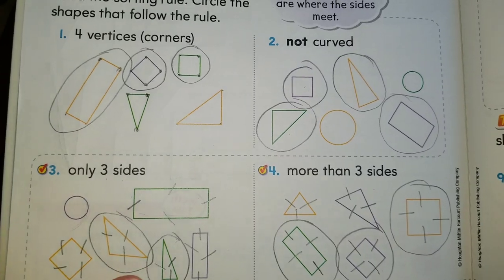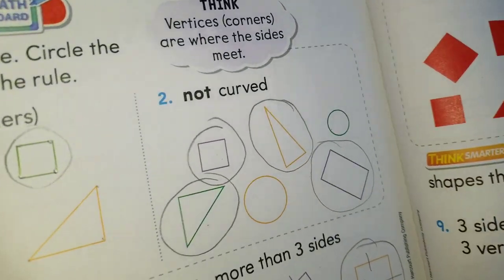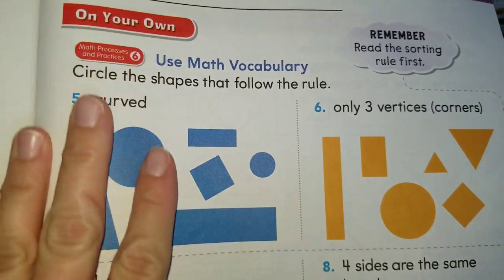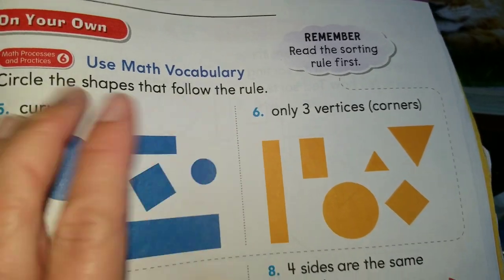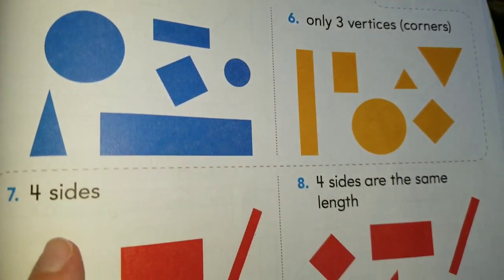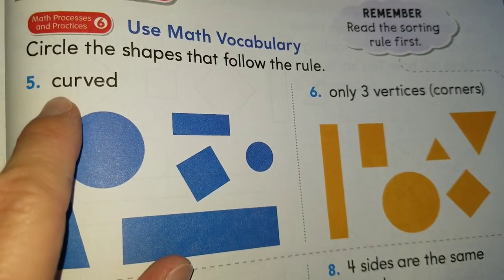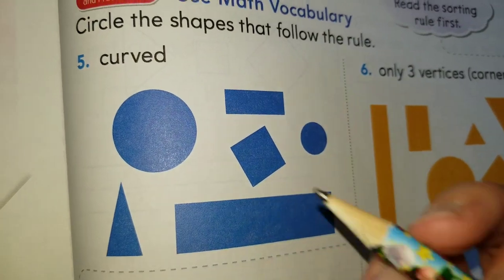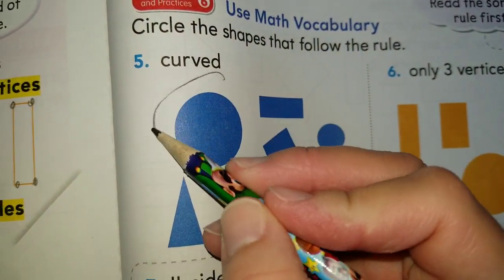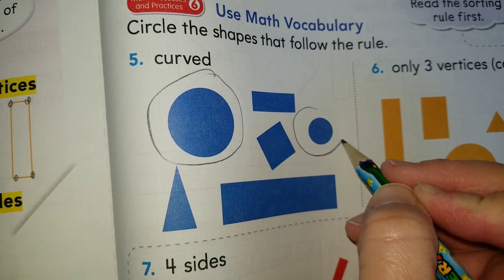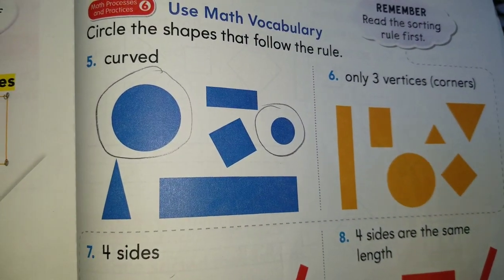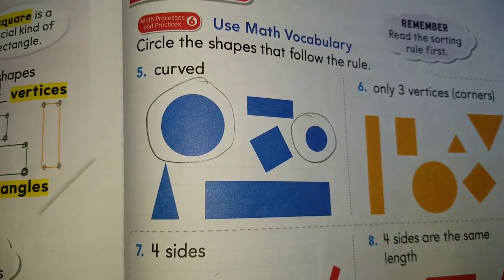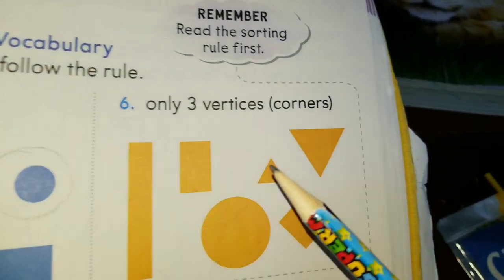Now we are moving on to our next page. We're going to continue following the rules — circle the shapes that follow the rule; the rule is going to be at the top. Number five says 'curved' — which are the shapes that are curved? The circles! Circles are the only shapes that are curved. It looks like a face now, right — the eyes, the nose, and the mouth!